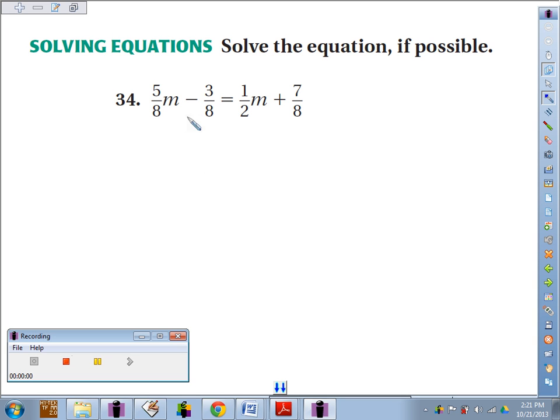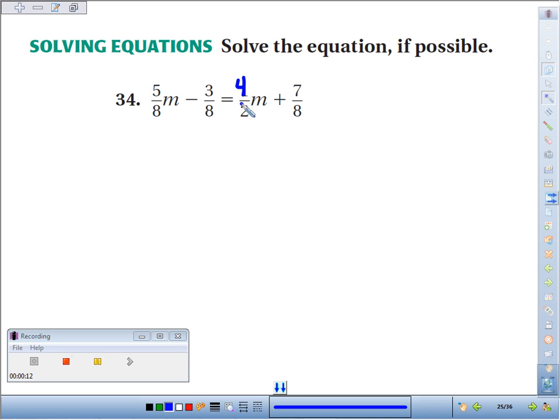Thirty-four, solve the equation 5/8 m minus 3/8 equals 1/2 m plus 7/8. First thing I notice, we have all eighths except this 1/2. Let's quickly convert that to eighths. So 1/2 m is the same as 4/8 m.